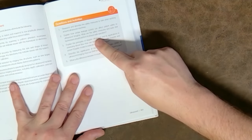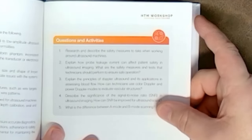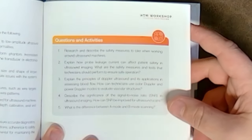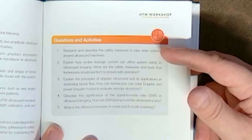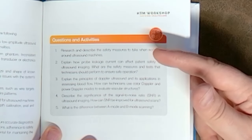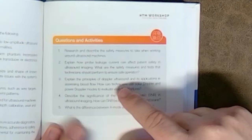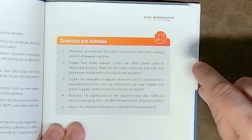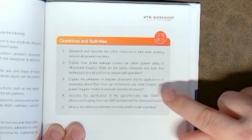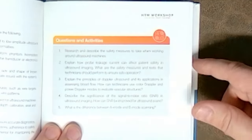I super love the questions and activities at the end that you can just browse through yourself. Research and describe the safety measures to take when working around ultrasound machines. Explain how probe leakage can affect patient safety and ultrasound imaging. What are the safety measures and tests that technicians should perform to ensure safe operation? Explain the principles of Doppler ultrasound and its applications. Describe the significance of signal noise ratio. What's the difference between A-mode and B-mode of scanning?